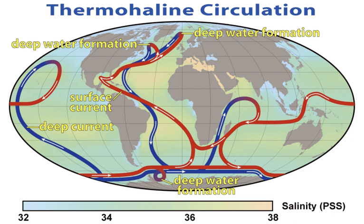The thermohaline circulation plays an important role in supplying heat to the polar regions, and thus in regulating the amount of sea ice in these regions, although poleward heat transport outside the tropics is considerably larger in the atmosphere than in the ocean. Changes in the thermohaline circulation are thought to have significant impacts on the Earth's radiation budget. Large influxes of low-density meltwater from Lake Agassiz and deglaciation in North America are thought to have led to a shifting of deep water formation in the extreme North Atlantic and caused the climate period in Europe known as the Younger Dryas.